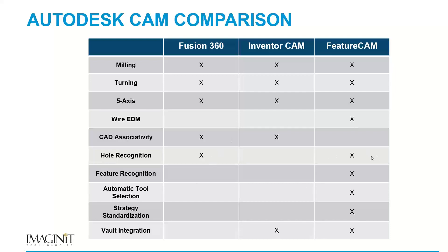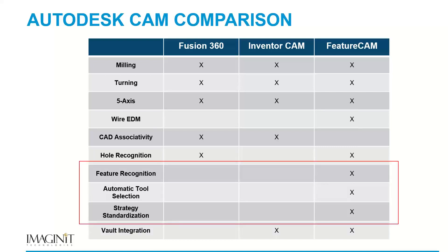FeatureCam has both hole recognition and feature recognition, allowing you to automatically program parts without having to choose tools, boundaries, or step over and step down values. You set your preferences and the software automatically recognizes and applies the knowledge you already have rather than having to remember it for every operation. That also comes with strategy standardization, so you're always getting a consistent and repeatable product. Those three things — automated feature recognition, tool selection, and standardization — are really what set FeatureCam apart.